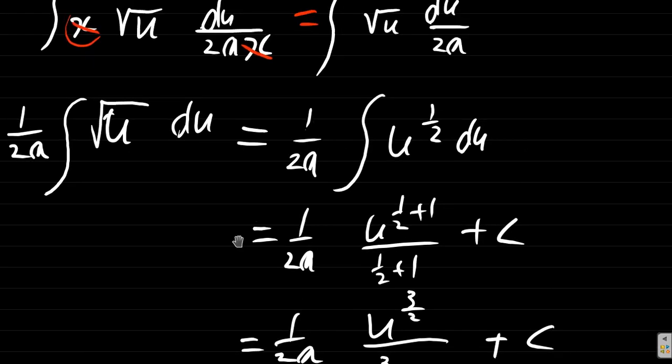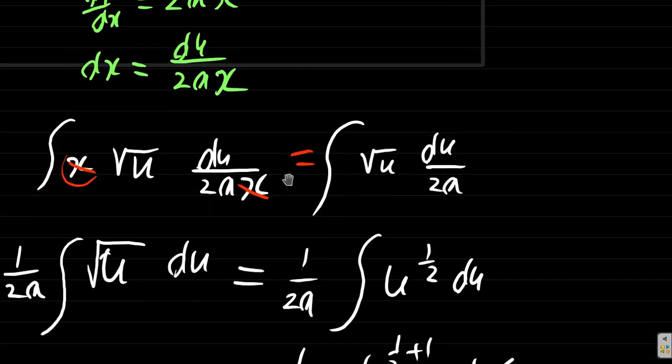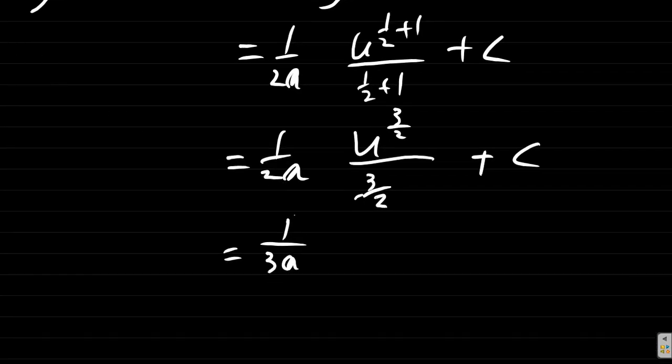But instead of u you write back what u was originally. u is ax squared plus b. So you have ax squared plus b to the power of 3 over 2 plus c.